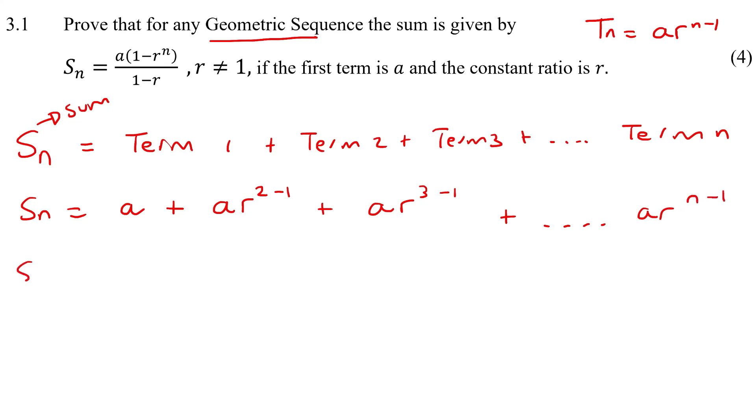If we just simplify that that'll be ar because this just becomes one. This just becomes ar squared and then dot dot dot this just becomes ar to the n minus one.